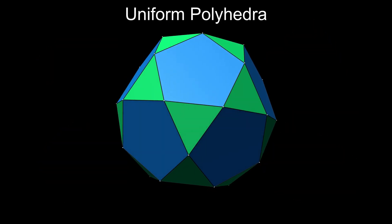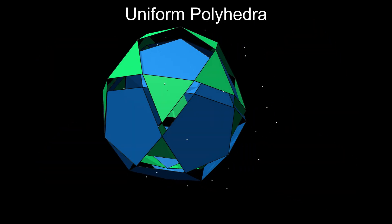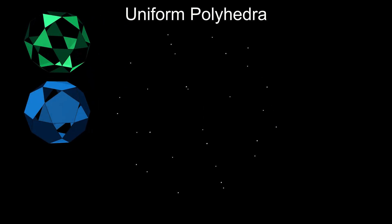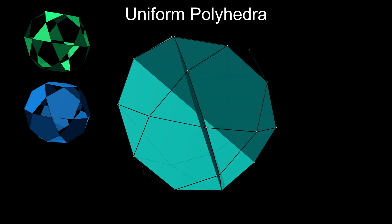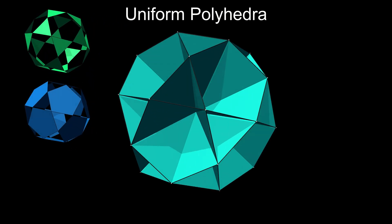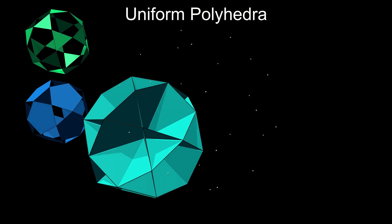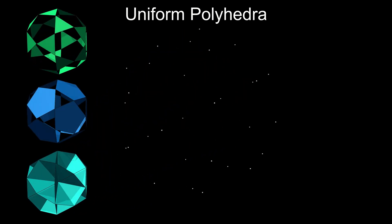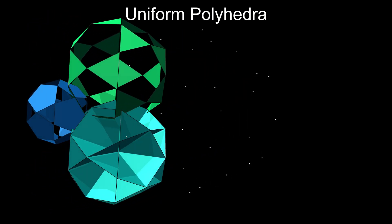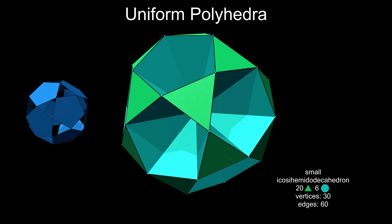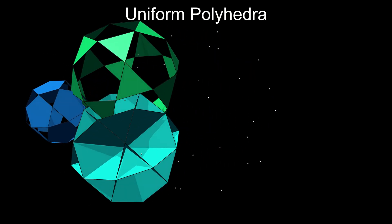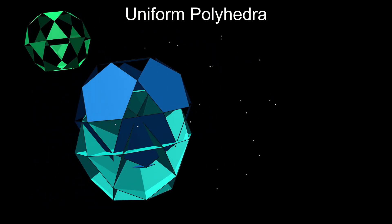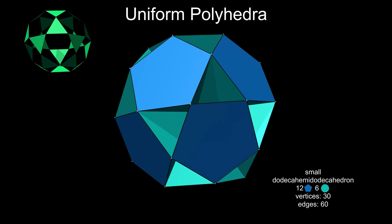The icosidodecahedron, in addition to its triangles and pentagons, can be faceted by decagons running through the centre. These can be combined with the original triangles to form the small icosahedrodecahedron, or with the pentagons to form the small dodecahemidodecahedron.